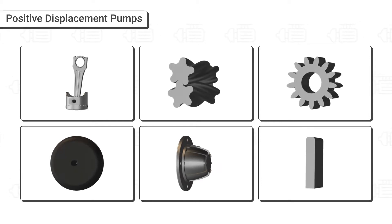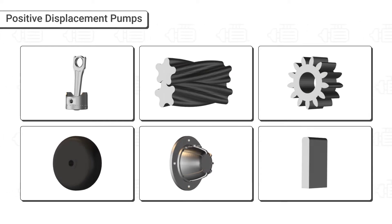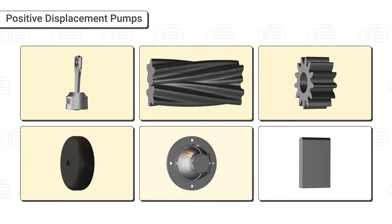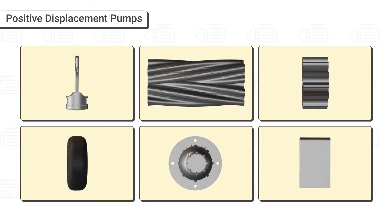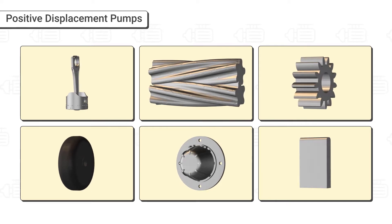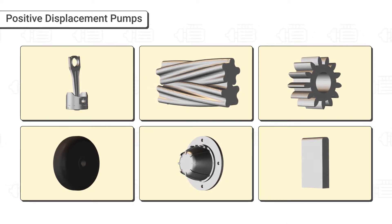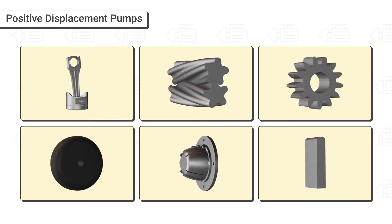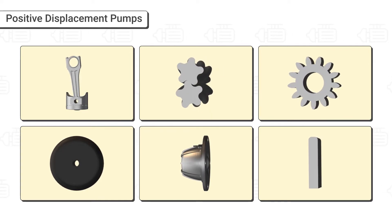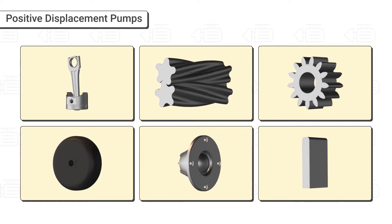A positive displacement pump moves a fluid by mechanisms like pistons, screws, gears, rollers, diaphragms, or vanes. These pumps cyclically close a fixed volume and move it mechanically through the system. This kind of pump is categorized based on the mechanism used to pump the fluid, and it can have a variety of applications based on its mechanism.